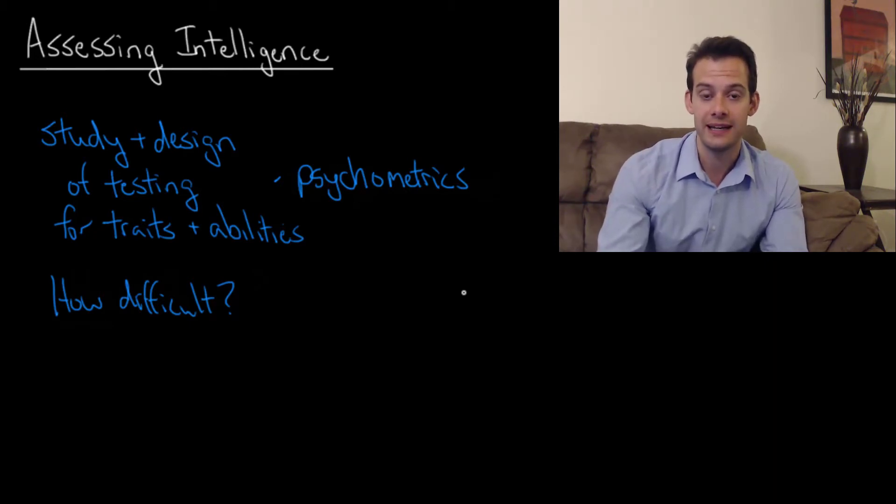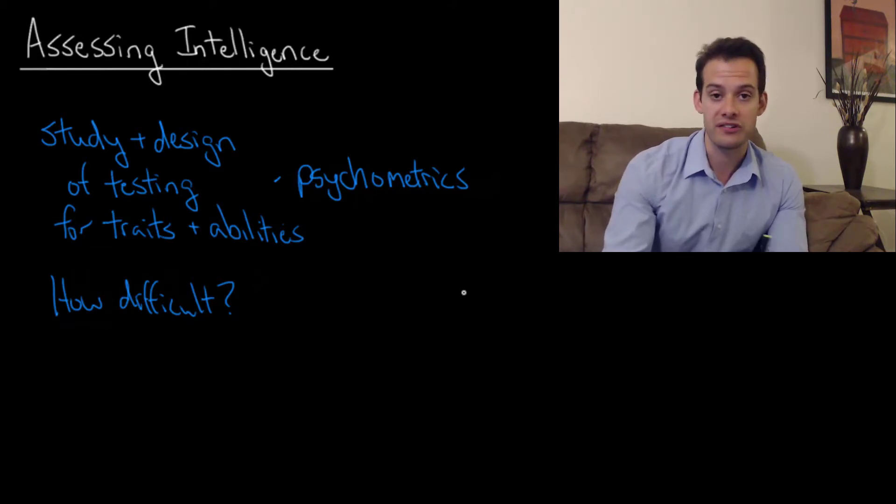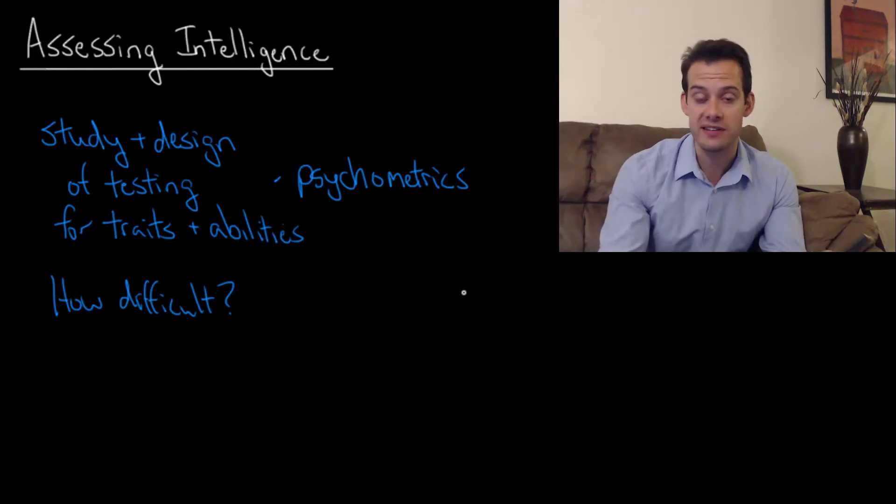The point of an intelligence assessment is to differentiate people. We want to find the differences between people when it comes to intelligence. And so if everyone gets the same score then the test is fairly useless. We want to have a test where people get very different scores and there's fine distinctions between one person's intelligence and another person's intelligence. And that may just come down to one particularly difficult question that this person can solve and this person wasn't able to solve.